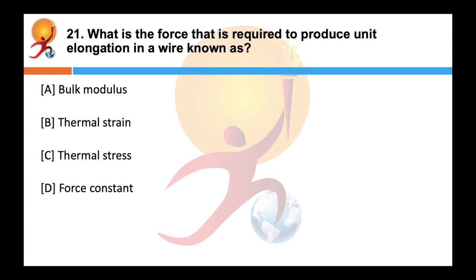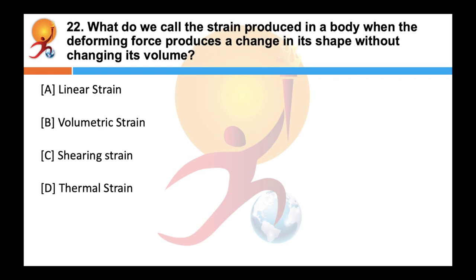What is the force required to produce unit elongation in a wire known as? Correct answer is force constant. The force constant of a material of wire is the force required to produce unit elongation. It is denoted by K, where K = F/l or K = YA/l. When the deforming force produces a change in the shape of the body without changing its volume, the strain produced is called shearing strain.